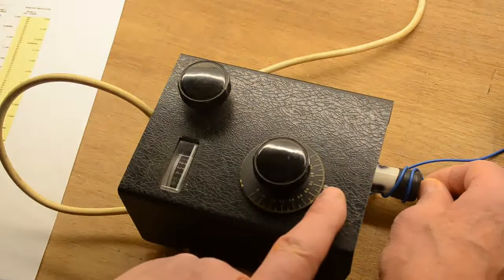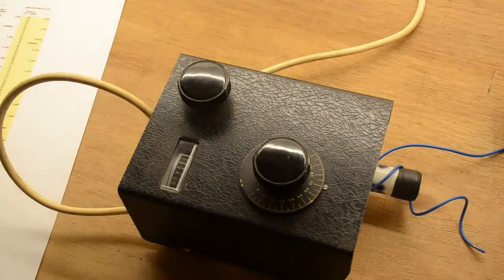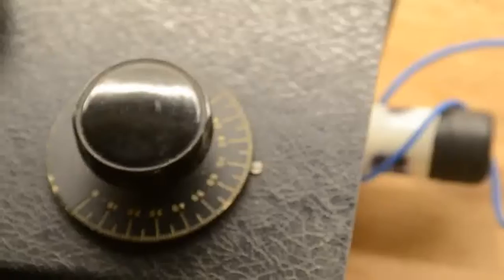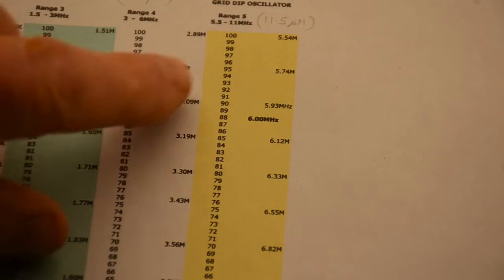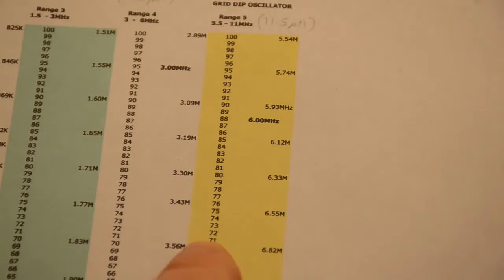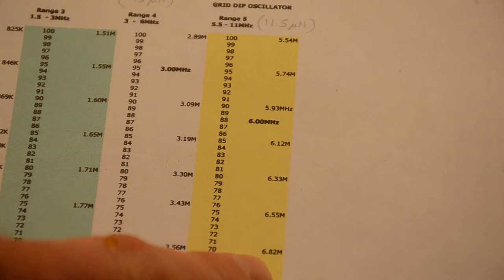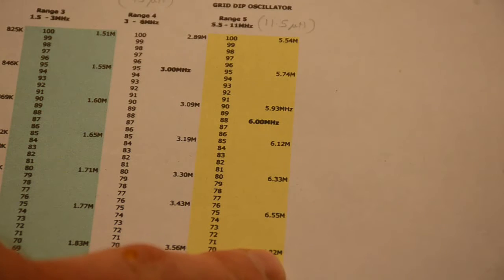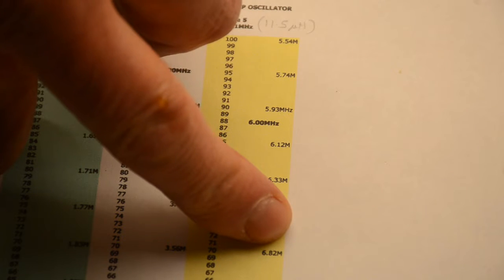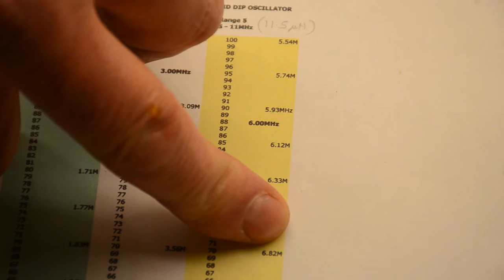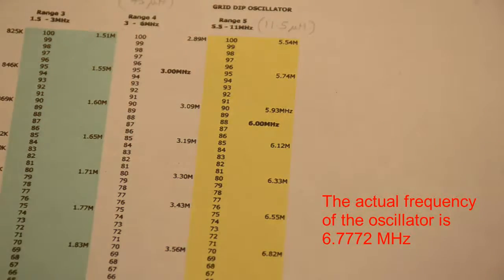Now we look at the dial, which is reading about 72. Looking at 72 on coil 5, the yellow scale, 72 is just below 6.82 megahertz at 6.55, so about here. The actual frequency is 6.772 megahertz, so you can see it's pretty much where it's supposed to be.